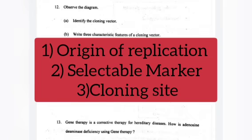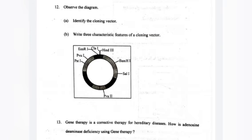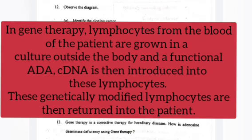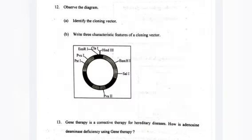Question 13. Gene therapy is a corrective therapy for hereditary diseases. How is adenosine deaminase deficiency treated using gene therapy? Answer: In gene therapy, lymphocytes from the blood of the patient are drawn and cultured outside the body, and a functional ADA cDNA is then introduced into these lymphocytes. These genetically modified lymphocytes are then returned into the patient.